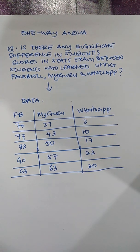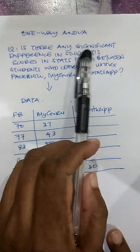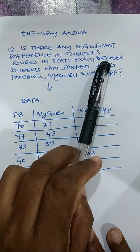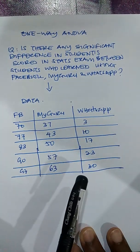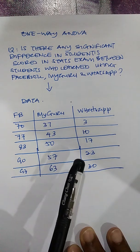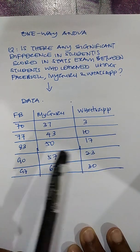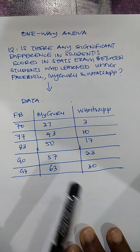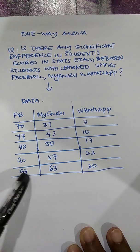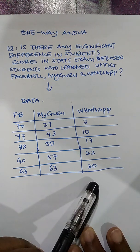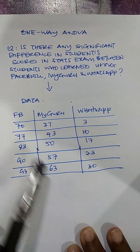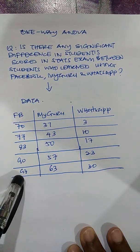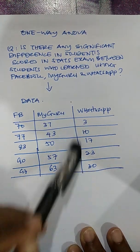Hello everyone. In this video I'm going to show you how to run one-way ANOVA by hand. The question I'm trying to address is: is there any significant difference in students' scores in a stats exam between students who learned using Facebook, MyGuru, and WhatsApp? I want to see if the statistics score differs between students who use different platforms or mediums to learn statistics. I have three groups: students who use Facebook, MyGuru, and WhatsApp.